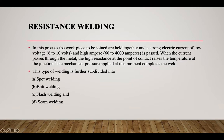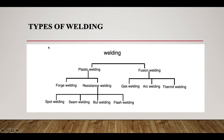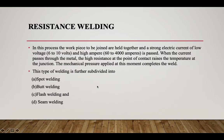Resistance welding is a form of plastic welding or pressure welding. In this process, the workpieces to be joined are held together and a strong electric current of low voltage — around 6 to 10 volts — and high amperage of 60 to 4000 amperes is passed through them. The high resistance at the point of contact raises the temperature at the junction, and then mechanical pressure is applied to complete the weld.